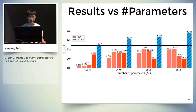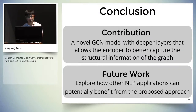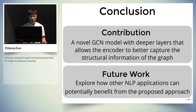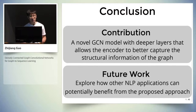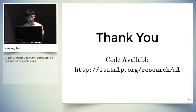Furthermore, our smallest DC-GCN model is able to outperform all vanilla GCN models even with fewer parameters. To conclude, our main contribution is proposing a deep GCN model with dense connectivity, which allows the graph encoder to better capture the structural information of the graph. For future work, we would like to explore how other NLP applications can benefit from the proposed approach — for example, we showed that dense connections are also beneficial for relation extraction. Our code is available online. Thank you.